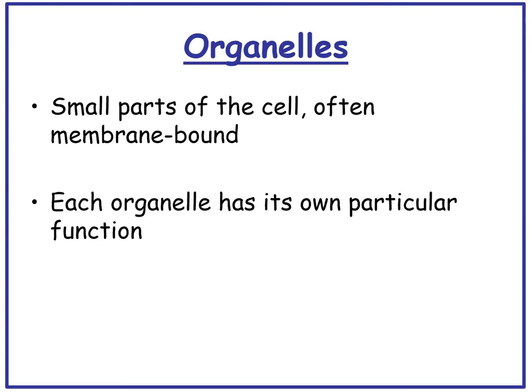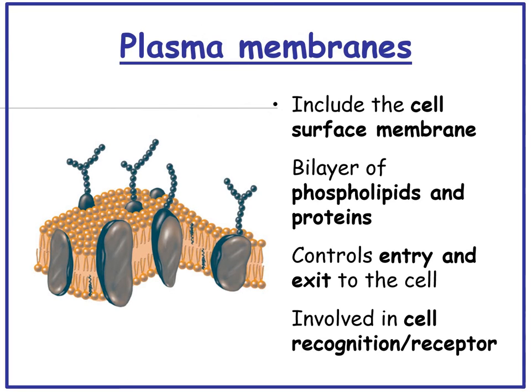Organelles are small parts of the cell which are often membrane-bound, and each organelle has its own particular function. The plasma membrane — including the cell surface membrane — is a bilayer of phospholipids and proteins. It controls the entry and exit of molecules into and out of the cell, and it's involved in cell recognition because it has receptors on it.